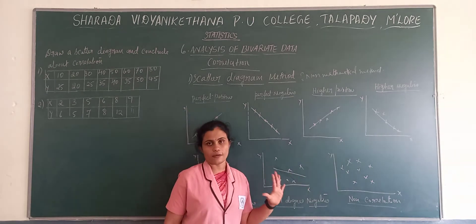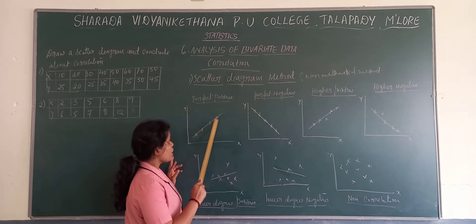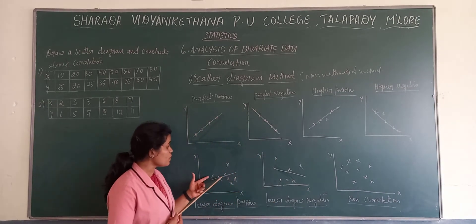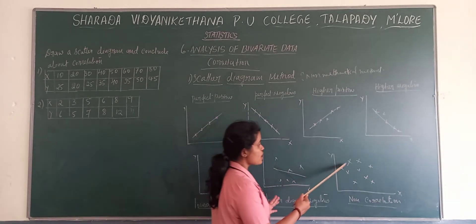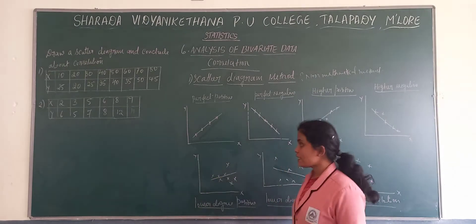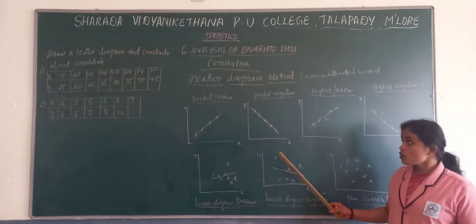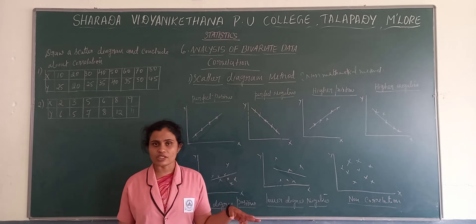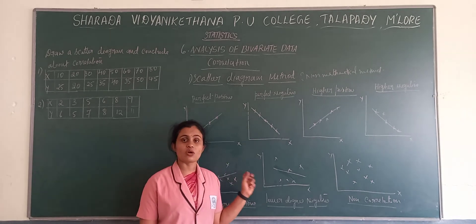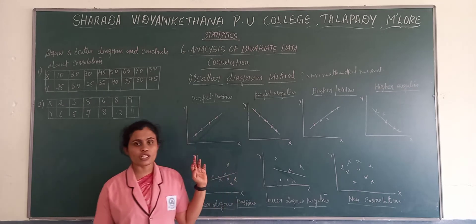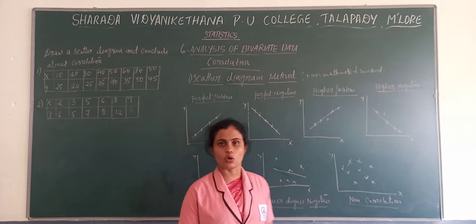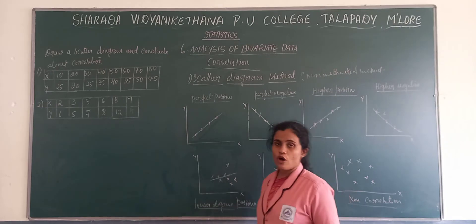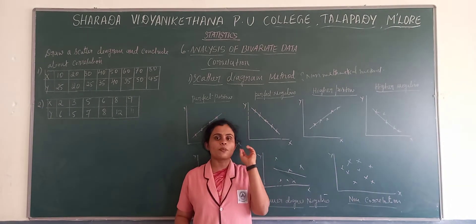The lines we draw should cross in between these points — that's it. It is more or less based on personal judgment. The scatter diagram method can tell us the direction — positive or negative — but we cannot properly identify the degree of correlation using this method. The demerit of this particular method is we cannot analyze the correlation properly because it is a non-mathematical method; we are not using any formulas.